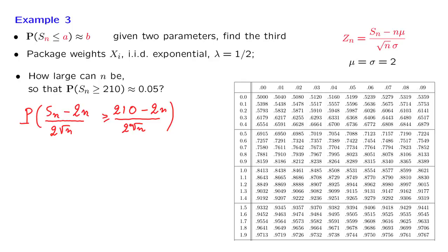Once more, this event here is identical to the original event, but now it is expressed in terms of the standardized version of Sn. This is a random variable that's approximately a standard normal. So once more, we're talking about the probability that the standard normal exceeds a certain value. And by the central limit theorem, this is approximately equal to 1 minus the standard normal CDF evaluated at this particular value here.